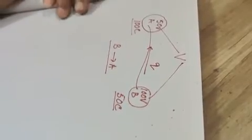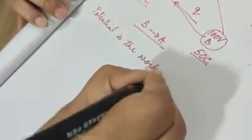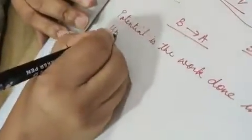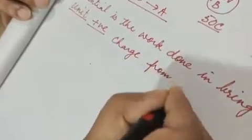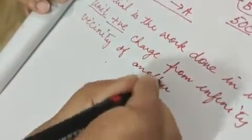Now, the formal definition of potential that one must realize. I am writing it down for you to grasp it better. Potential is the work done in bringing unit positive charge from infinity to vicinity of another charge. V is given as W by Q. A very important formula.